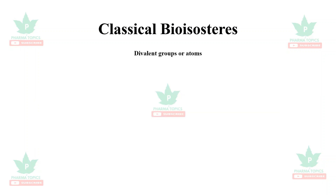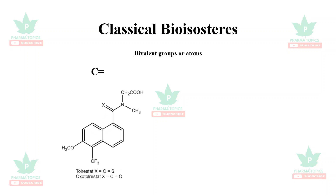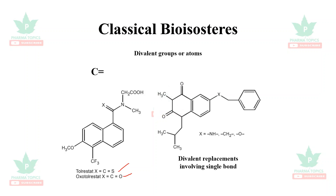Now let us look at divalent groups or atoms. An example is the drug tolaristat: when the C=C bond is substituted with C=S, you get tolaristat, an aldose reductase inhibitor. When substituted with C=O, you get oxo-tolaristat. These are examples of divalent bioisosteric replacements.